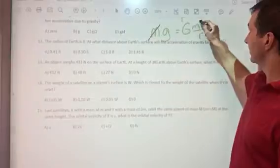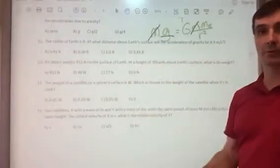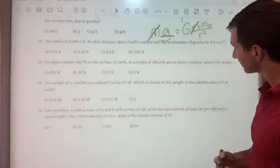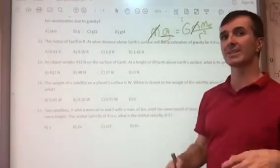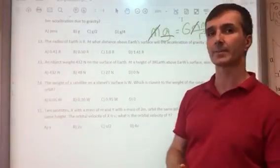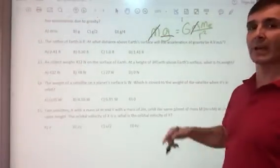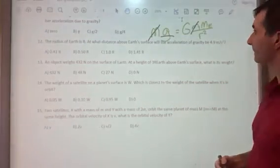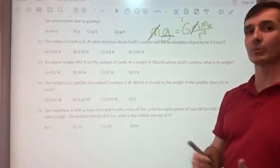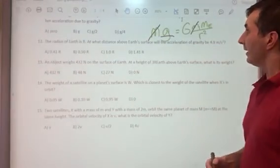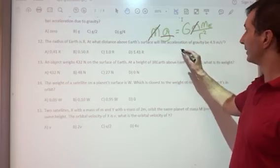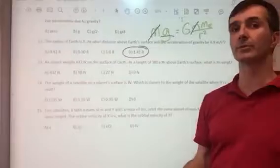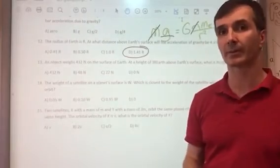My mass is irrelevant for the acceleration due to gravity or the gravitational field strength at that point. I want to know where little g is half as much as it normally is. That means r² would have to equal twice the normal radius of the earth. If you take the square root of that, you get 1.41 or √2 times the radius of the earth.